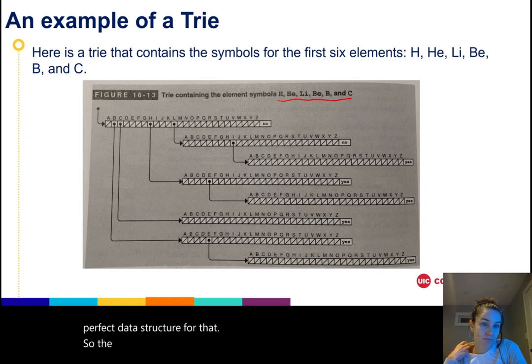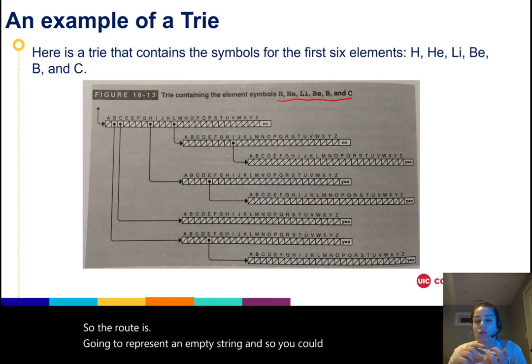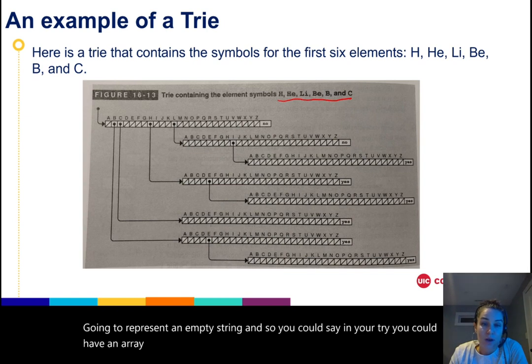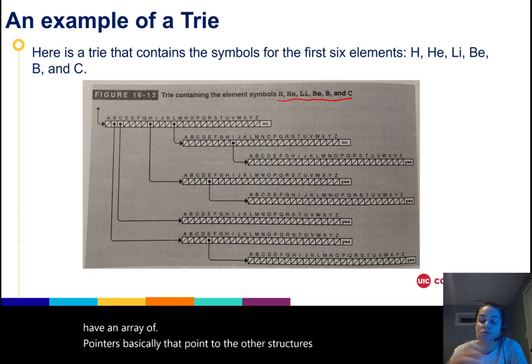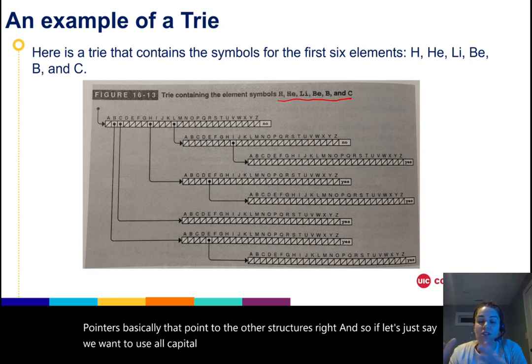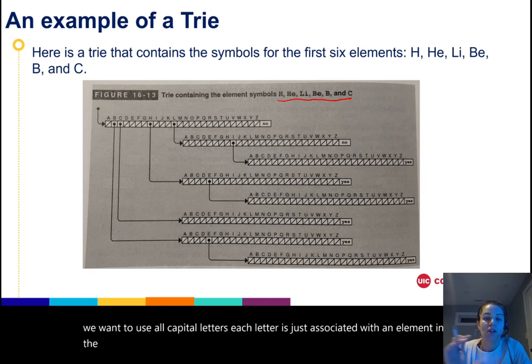The root is going to represent an empty string. You could say in your trie you could have an array of pointers that point to the other structures. If let's just say we want to use all capital letters, each letter is just associated with an element in the array.